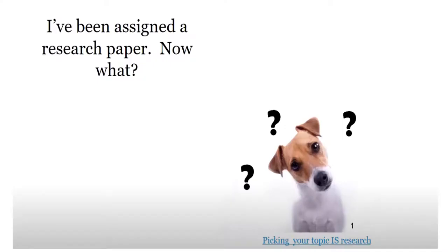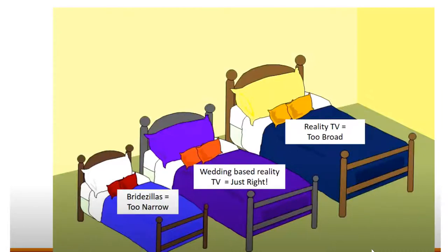Now that we know all about the library website, let's talk about choosing a research topic. Choosing a topic is never as simple as picking a topic and writing about it. You must first do research to determine if there are enough or too many resources, and whether you need to broaden or narrow your topic. Let's consider this the Goldilocks phase — you must find a topic that isn't too broad or too narrow; we need to find one that is just right.